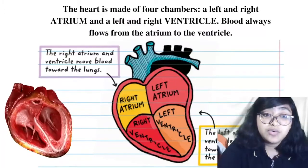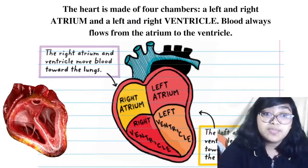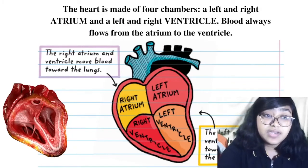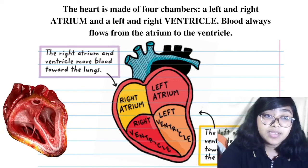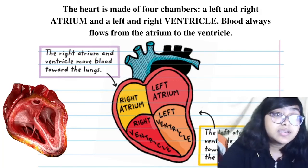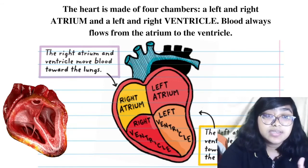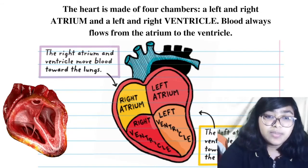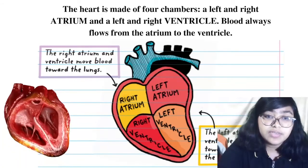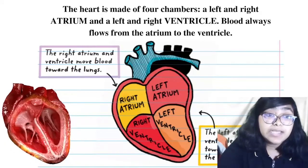The heart is made up of four chambers: the left atrium, the left ventricle, the right ventricle, and the right atrium. The right ventricle moves blood towards the lungs. We will learn all about this in the next subsequent video.